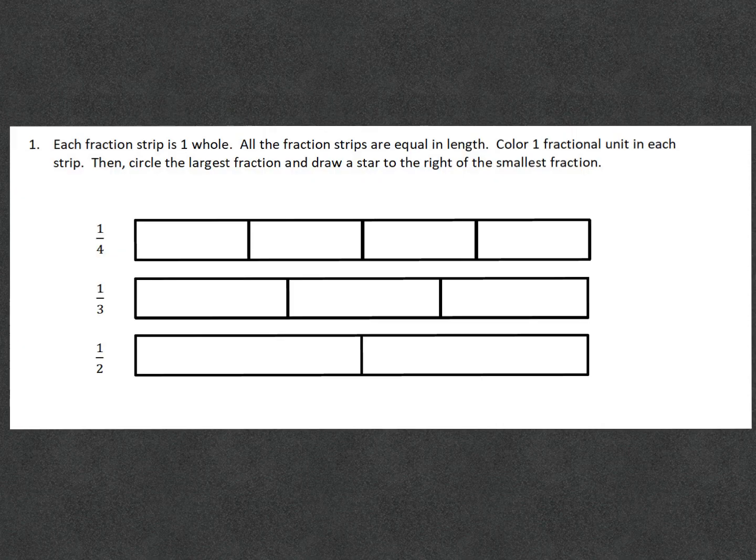Each fraction strip is one whole. All of the fraction strips are equal in length. Color one fractional unit in each strip. Then circle the largest fraction and draw a star to the right of the smallest fraction. So because this fraction says one fourth, we will be coloring in one part of the whole four.